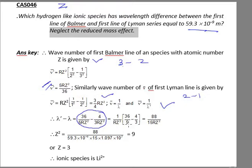I will get 1/RZ² common, which gives 88/15RZ². Now I know R value, so I will get Z. λ' - λ equals 88/15RZ². So Z² equals 88 divided by (59.3 × 10⁻⁹ × 15 × 1.097 × 10⁷). When we calculate this, I get Z² as 9.